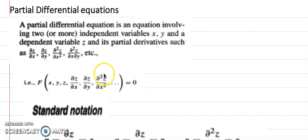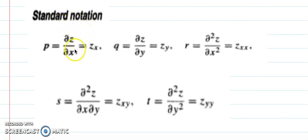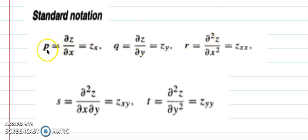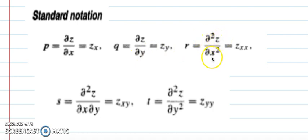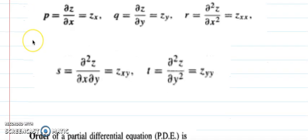There are standard notations for partial differential equations. The first order partial derivative of Z with respect to X is denoted by P, and with respect to Y by Q. R stands for differentiating Z twice with respect to X. S stands for differentiating with respect to both X and Y. T stands for differentiating with respect to Y twice.